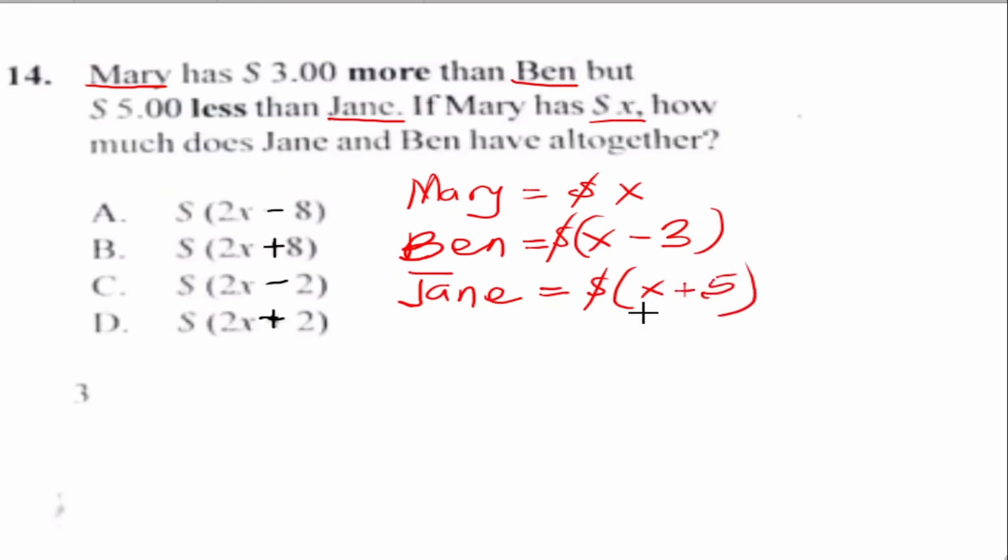That is what I want to write. So Jane will be Mary's share, which is x plus 5 dollars. I put the dollars out because each of them is in dollars and I don't want to repeat the dollars for each of them. Now we are able to express the information in terms of Mary's share, Ben's share, and Jane's share.